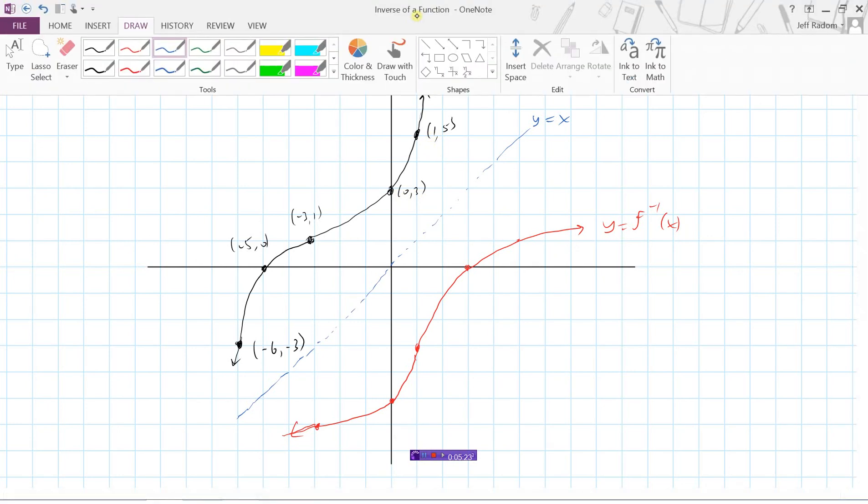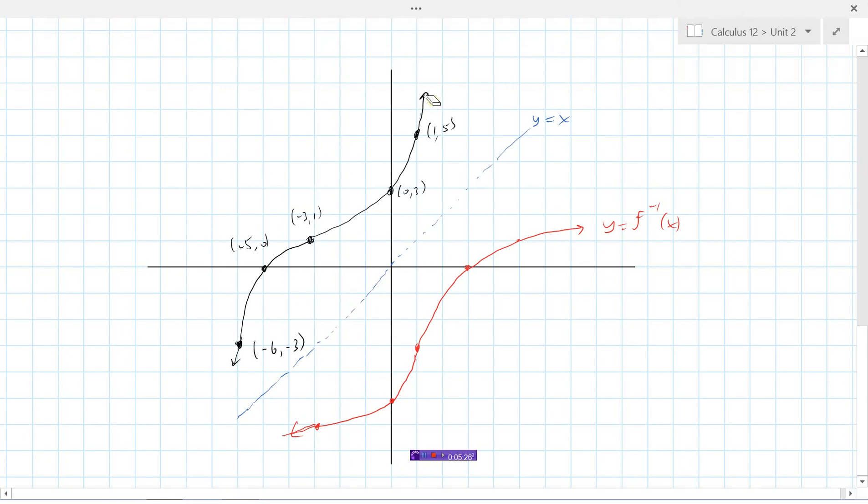If we take a look at this black graph here, let's call this y equals f of x, it's our original graph. If we look at the domain of it, the domain of this function goes from negative 6 to positive 1. So negative 6 to positive 1, and its range would be from a y value of negative 3 to a y value of 5. So there's the domain and range of the original function f of x.